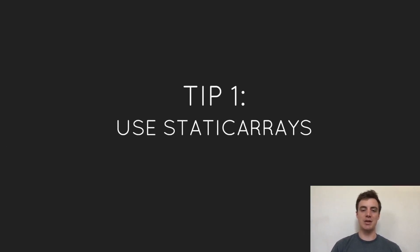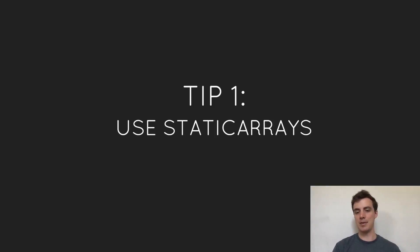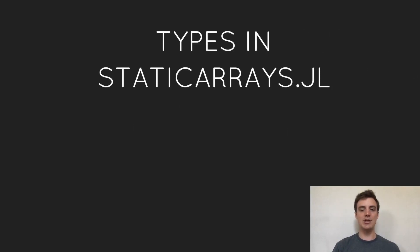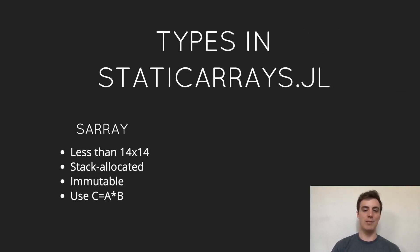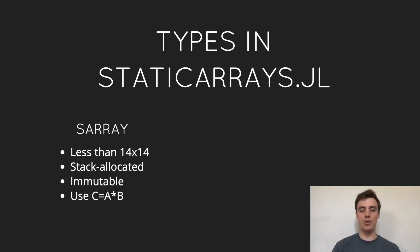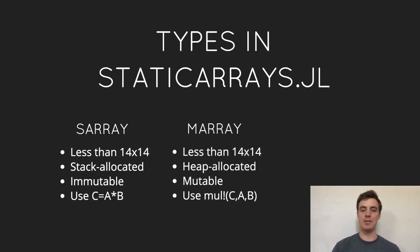This brings us to my first tip: use the StaticArrays.jl package. For me this is one of the core tools in the Julia ecosystem. As a brief overview of the types available, we have the standard SArray, which is what most people use. These are limited to about 14 by 14 dimensional arrays, allocated on the stack, immutable, and because of that they're very fast. You can use normal, natural syntax for doing matrix multiplication.